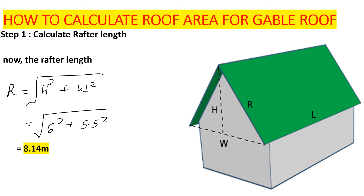The rafter length equals the square root of h² plus the new width². So: √(6² + 5.55²) = √(36 + 30.8025) = √66.8025, which gives us 8.14 meters. So our rafter length is 8.14 meters.